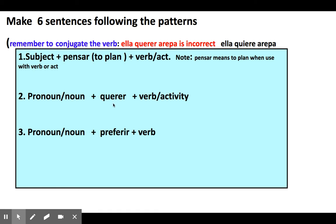If you want to use ella, you have to go and find out what the conjugation for querer is for ella. So you go back into your conjugations and you get ella quiere. That's why it's important that you write down the conjugations — I need you to write them down either in your notebook or on flashcards, because I need you to make proper sentences. When you're making sentences, make sure that you have conjugated the verb.